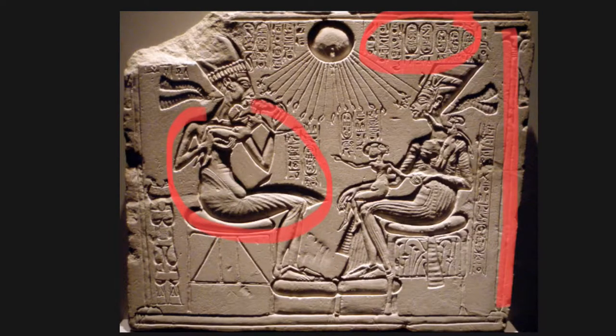I'd also like to talk about the depiction of the sun in this artwork because it is a symbol of Aten or the sun god. There is also a depiction of a cobra on the sun which represents monotheism and the idea of a supreme deity.